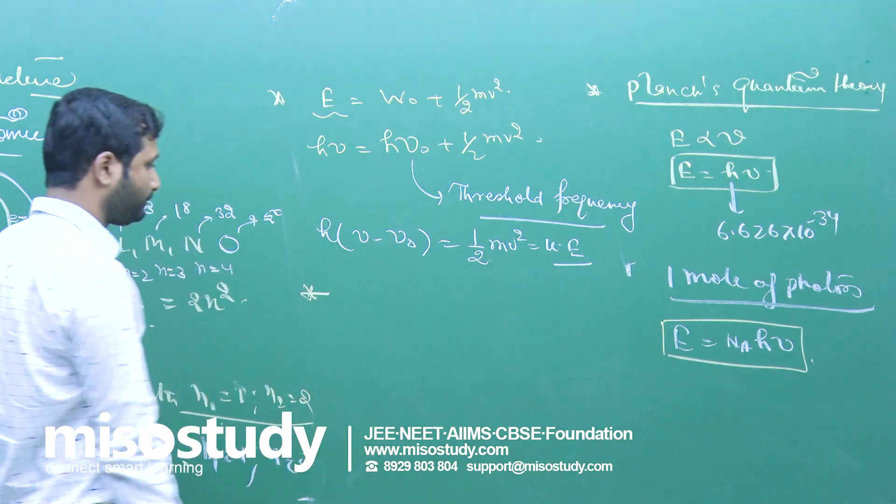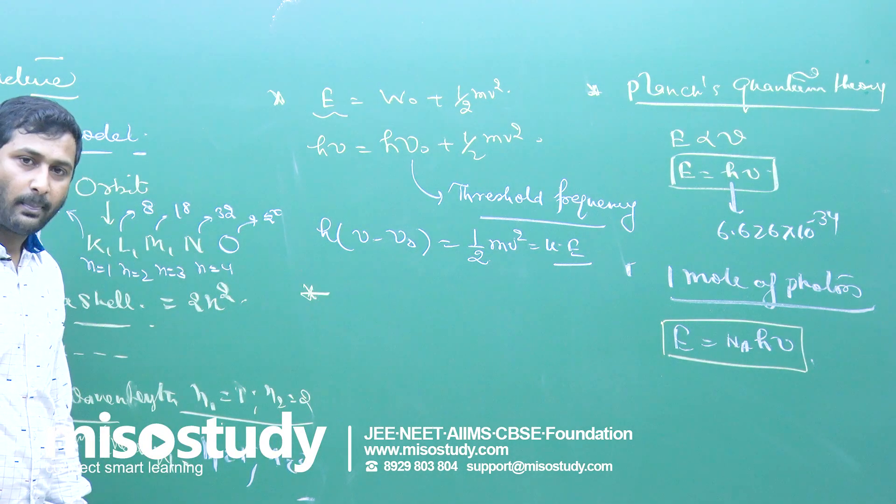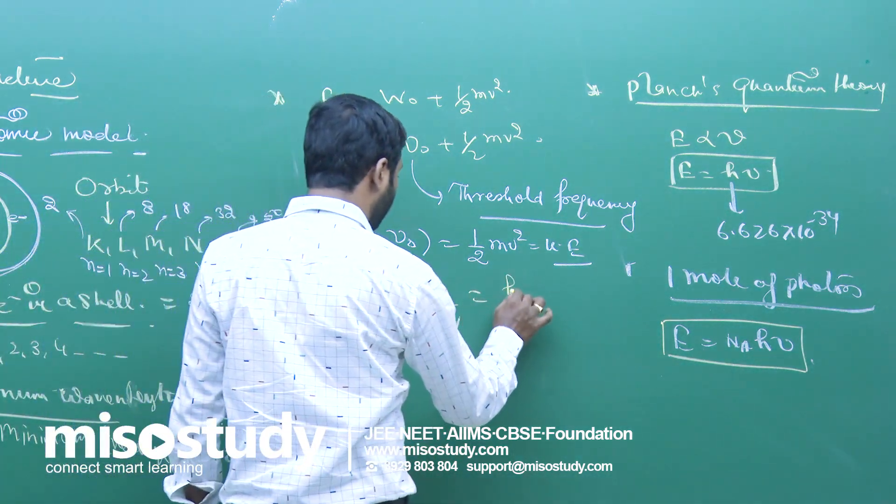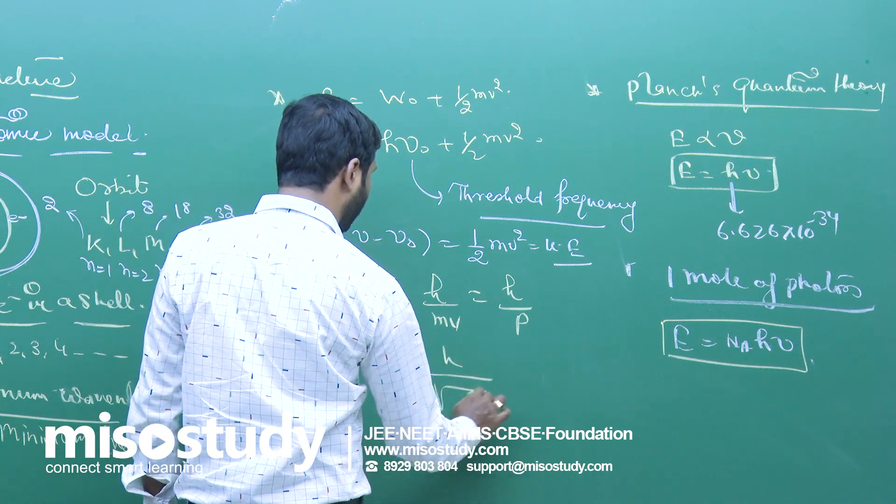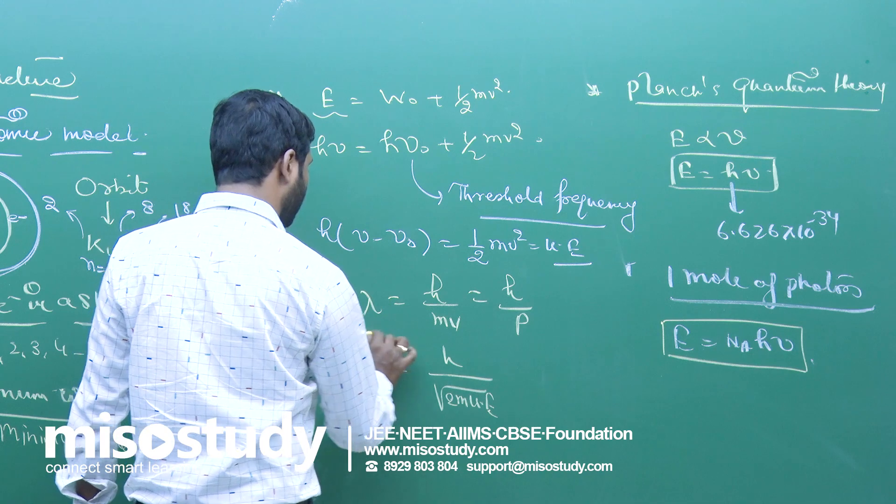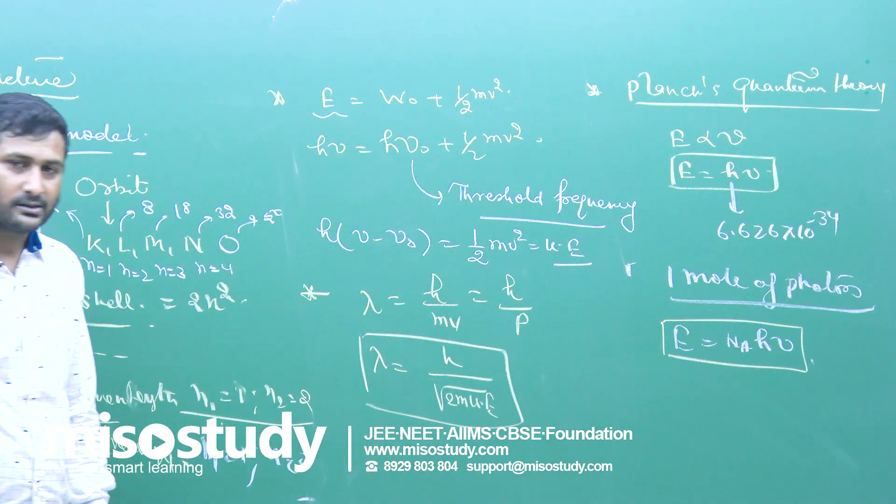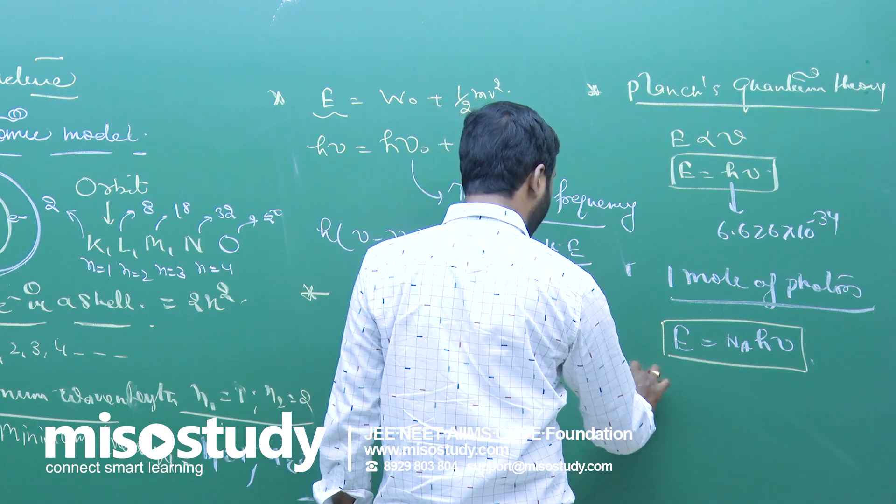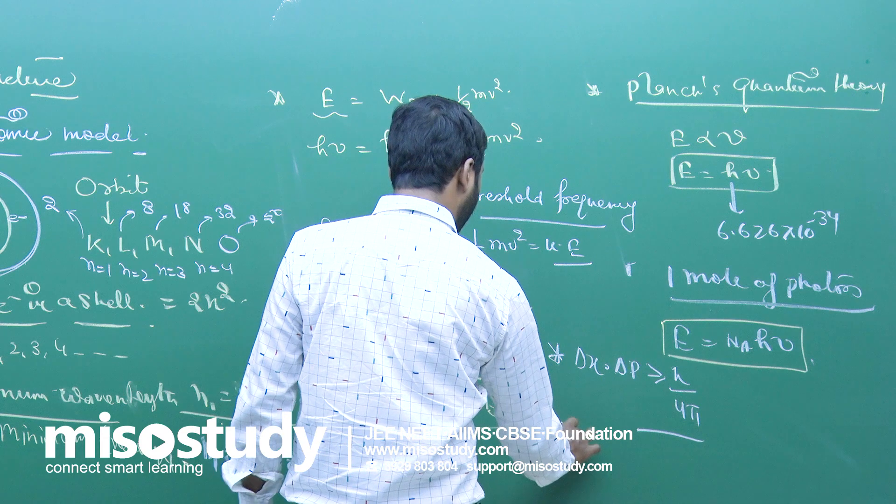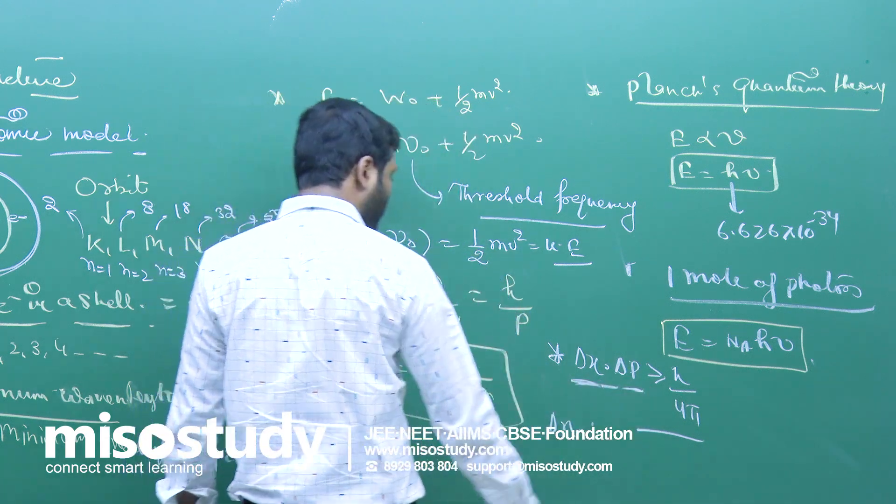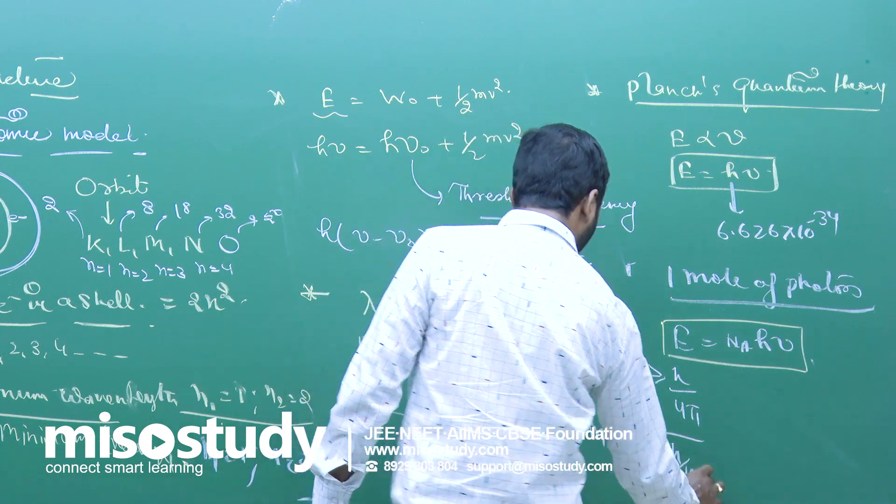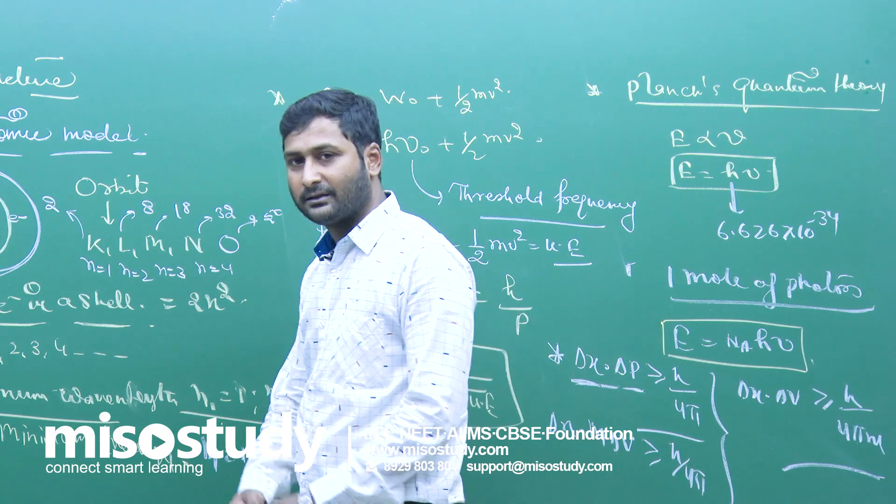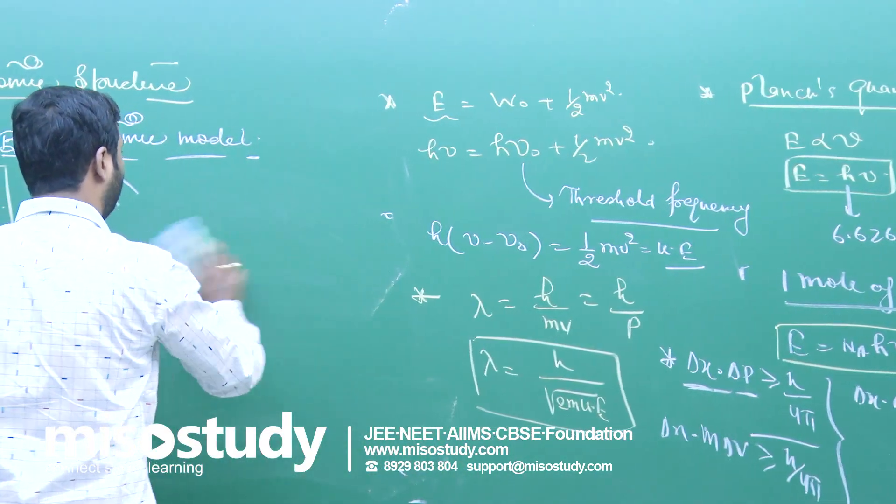There comes the next one, matter wave. λ equals de Broglie wave equation h upon mv, or λ equals h upon p, or λ equals h upon square root 2mE. Heisenberg uncertainty principle: Δx into Δv is greater than h upon 4πm. These are the things we generally observe.